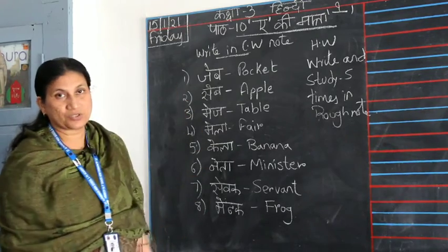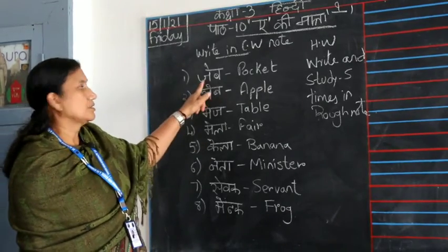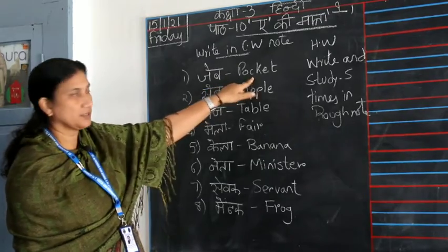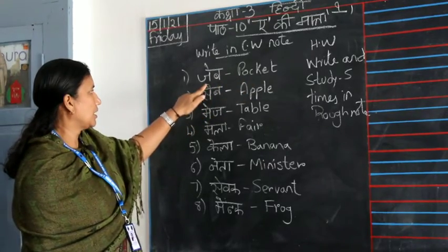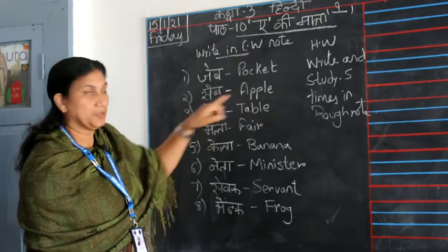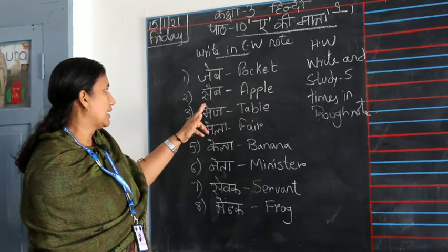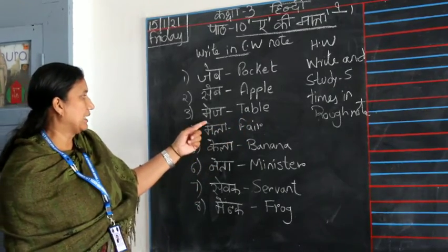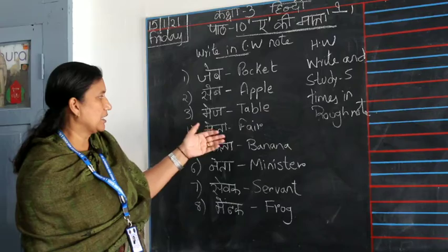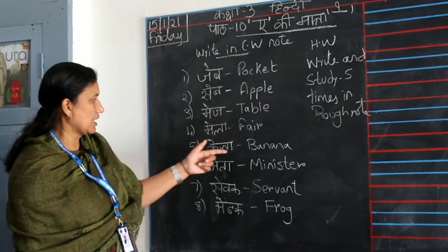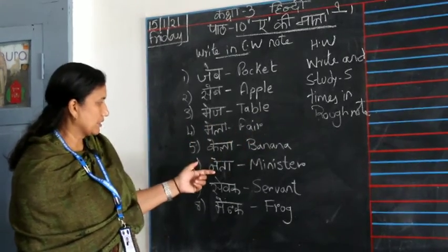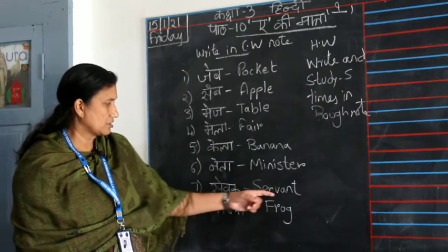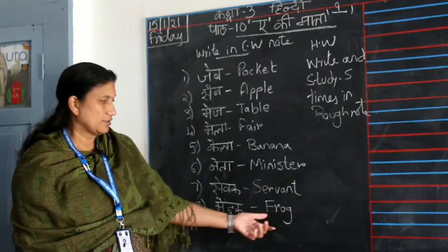Let me repeat these words once again. Jeb — pocket. Seb — apple. Meja — table. Mela — fair. Kela — banana. Neta — minister. Sevak — servant. Menduk — frog.